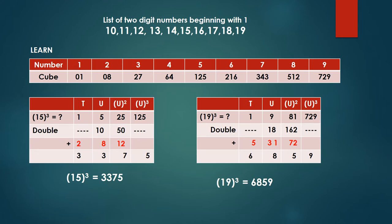Now first of all let us take a close look at all the two digit numbers beginning with 1. How many numbers are there? 10, 11, 12, 13, 14, 15, 16, 17, 18, 19, that's it.